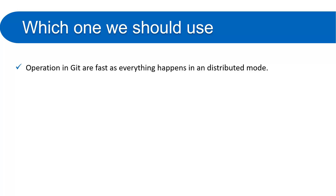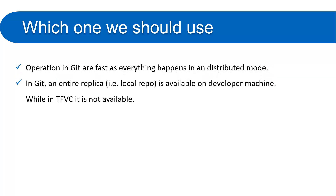Which one should you use? Operations in Git are fast because everything happens in distributed mode. In Git you commit to the local repository, so operations like switching branches are very fast. In the centralized version control, switching a branch requires the entire code to travel from the server to your local machine, which can be slower.